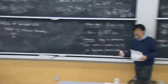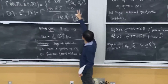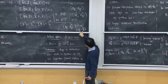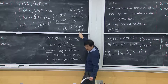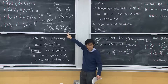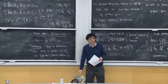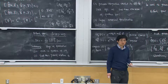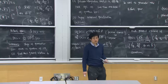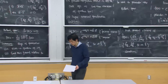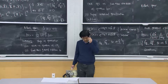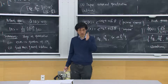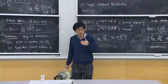A student asks about commutation relations at different times. The answer is that canonical commutation relations are imposed at equal time — once you quantize, T has a pronounced role and T and X are not on equal footing. The canonical quantization condition must always be at equal time.